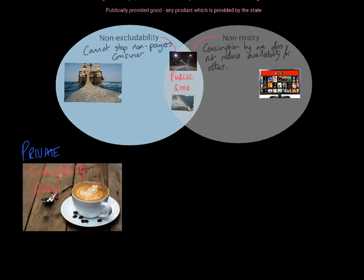Goods which demonstrate rivalry but not excludability lead to a concept called the tragedy of the commons — a long-recognised principle in economics. It suggests that when there is no specific ownership over something and it's held in common ownership, people will over-consume and not consider that their consumption reduces what's available for others. This was recognised many years ago with grazing sheep on shared land. It causes a problem because it generates what we call a free rider problem — because you can't stop people from benefiting, non-payers will benefit from a free ride that others have paid for.